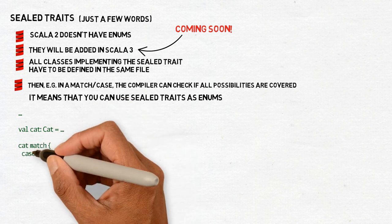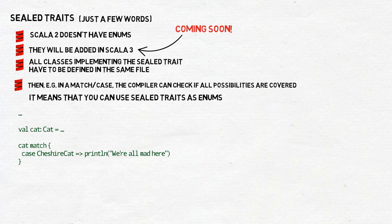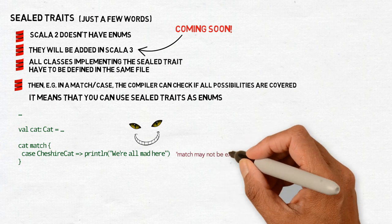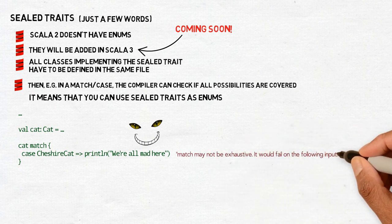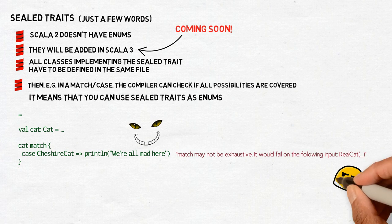Let's expand on the example from the previous paragraph. It will work and display we're all mad here, in case the cat is the Cheshire cat, as it should, but during the compilation you will see an error. Match may not be exhaustive. It would fail on the following input, real cat. It not only tells you that you missed some subtypes, but even tries to give you a hint what is it that you missed. Real cat is the other possible subtype of the sealed trait cat.